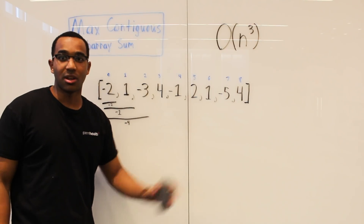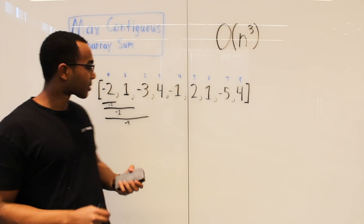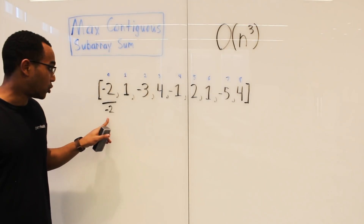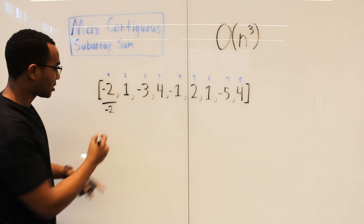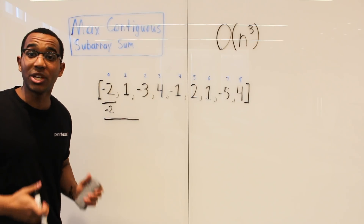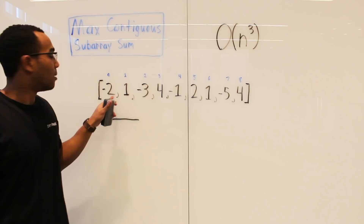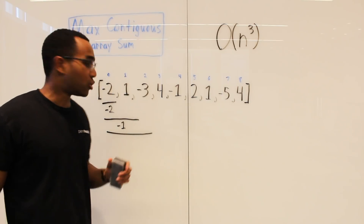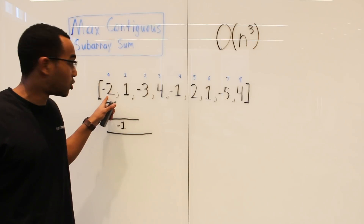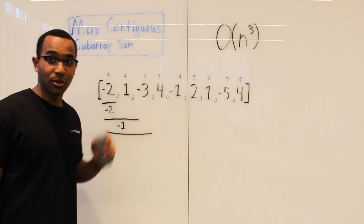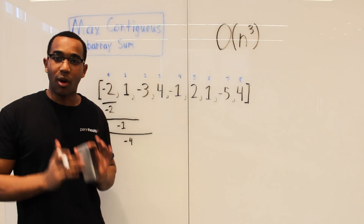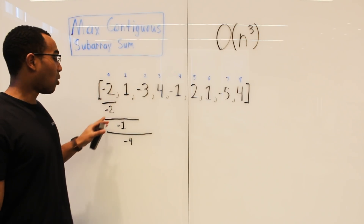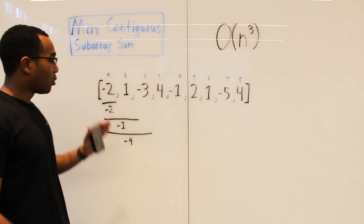The cubic solution looks at all windows. When it wants the sum for a new window like negative 2 and 1, it goes all the way back to the beginning and computes negative 2 plus 1 to get negative 1. Then for the next window it goes back again: negative 2 plus 1 plus negative 3 to get negative 4. We are repeating work — going all the way back each time.